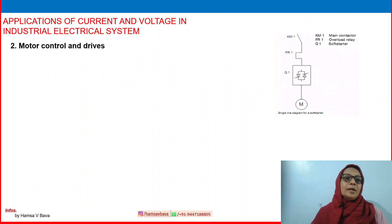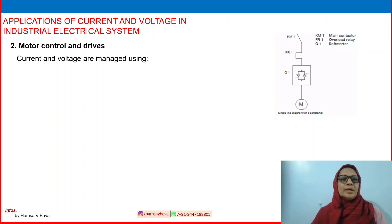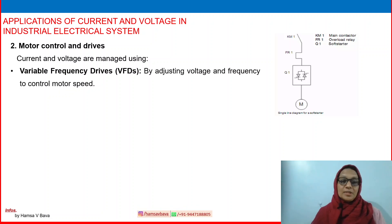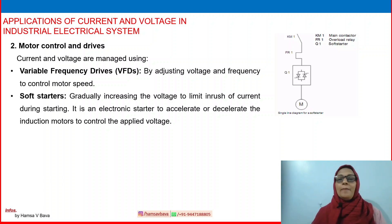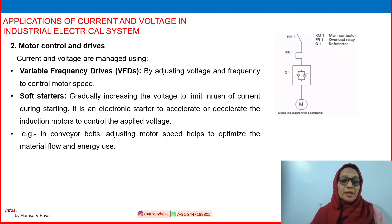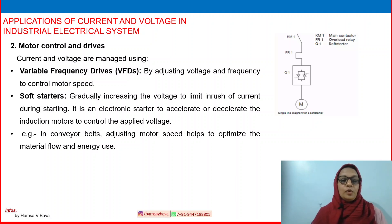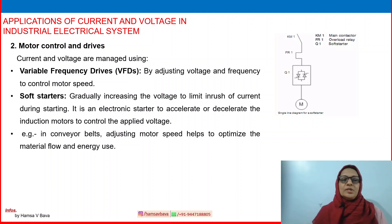Motor control and drives: motors are a crucial component in all industries. Current and voltage are managed using variable frequency drives, which adjust voltage and frequency to control motor speed. Soft starters gradually increase the voltage to limit the inrush of current during starting — they are electronic starters used to accelerate or decelerate induction motors by controlling the applied voltage. In conveyor belts, adjusting motor speed helps optimize material flow and energy use, controlled by the soft starter.